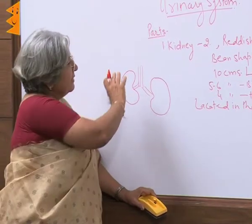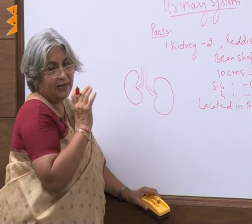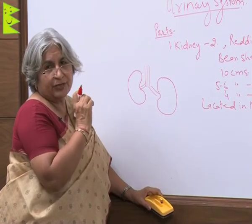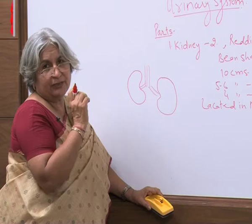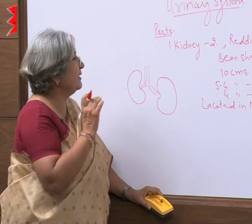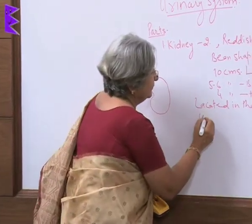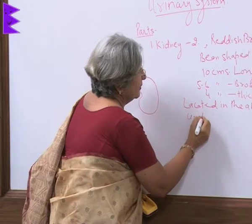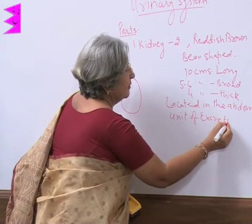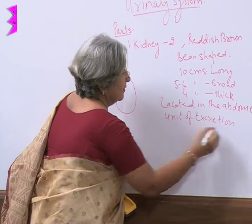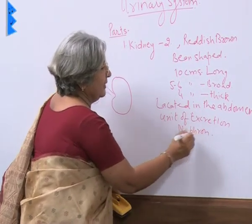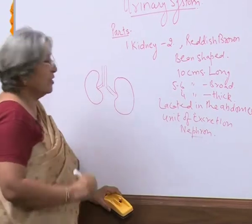The kidney is mainly concerned with urine formation. The unit of excretion found in millions in the kidney is the nephron. We will study the details of the nephron separately.